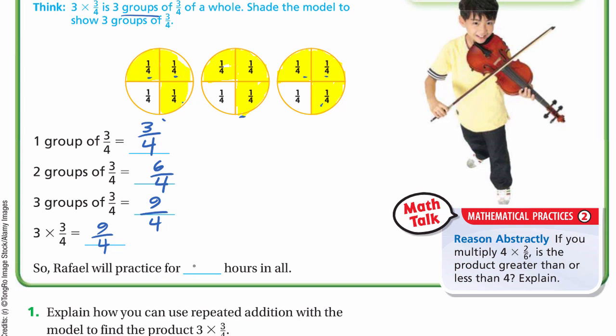So Raphael will practice for nine-quarters hours in all. Here is what we did: we modeled three-quarters three times and counted all the quarters that we shaded — one, two, three, four, five, six, seven, eight, nine quarters.